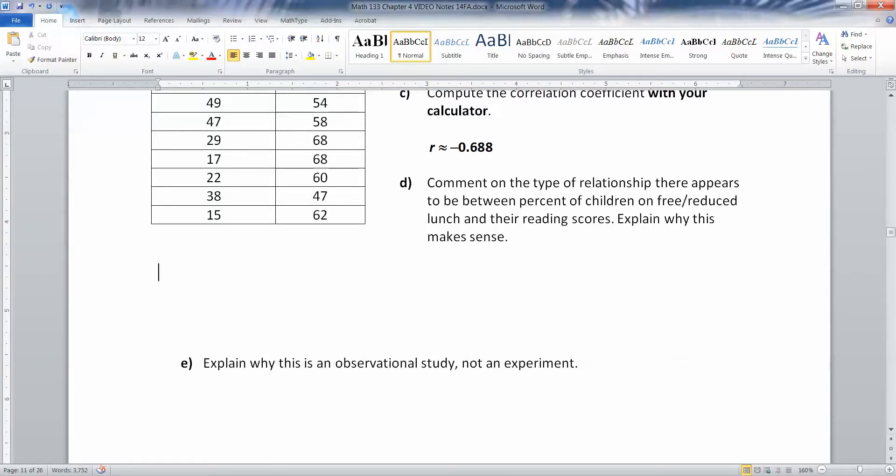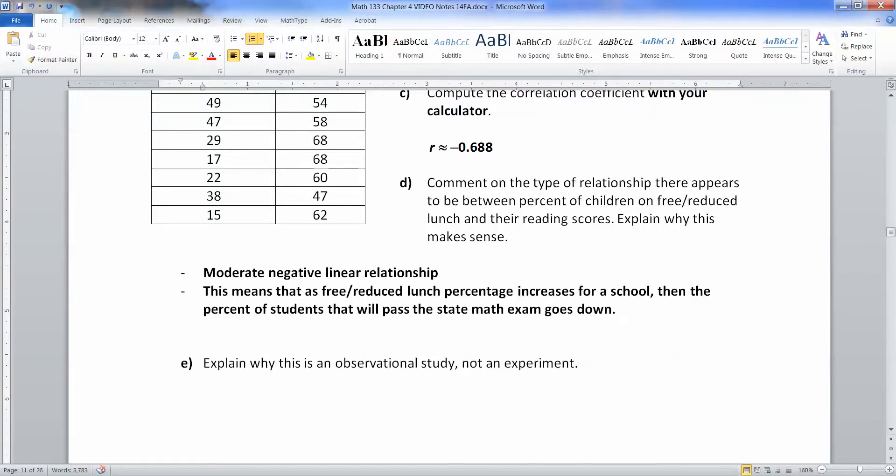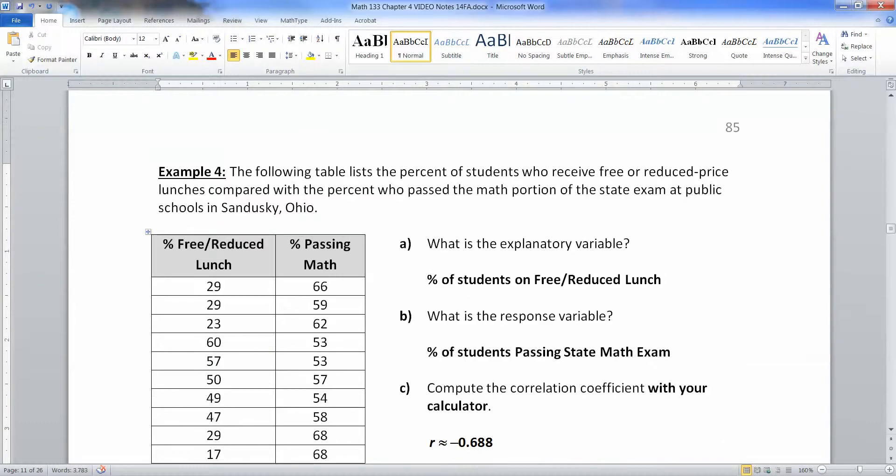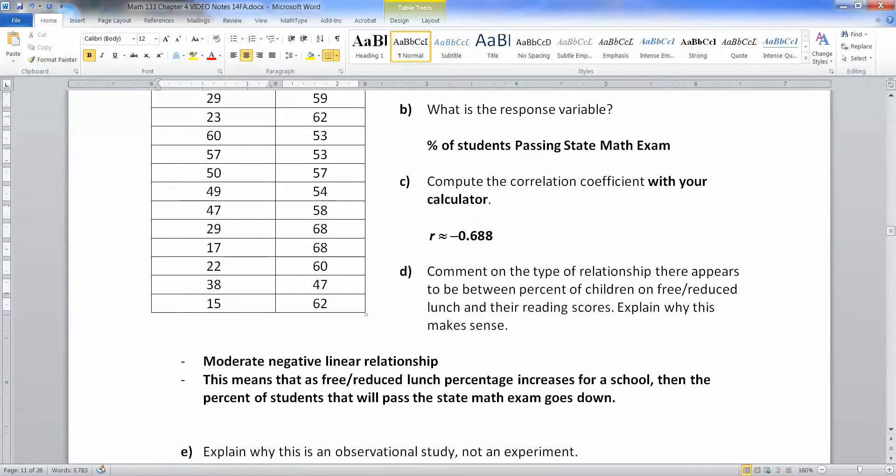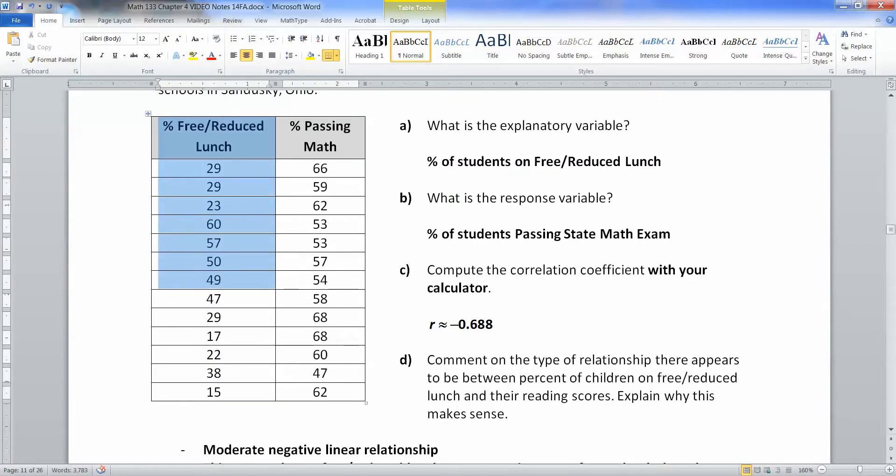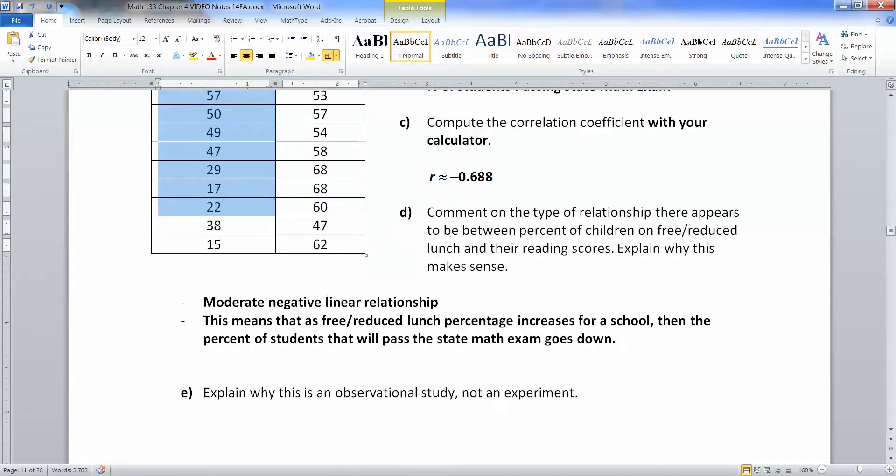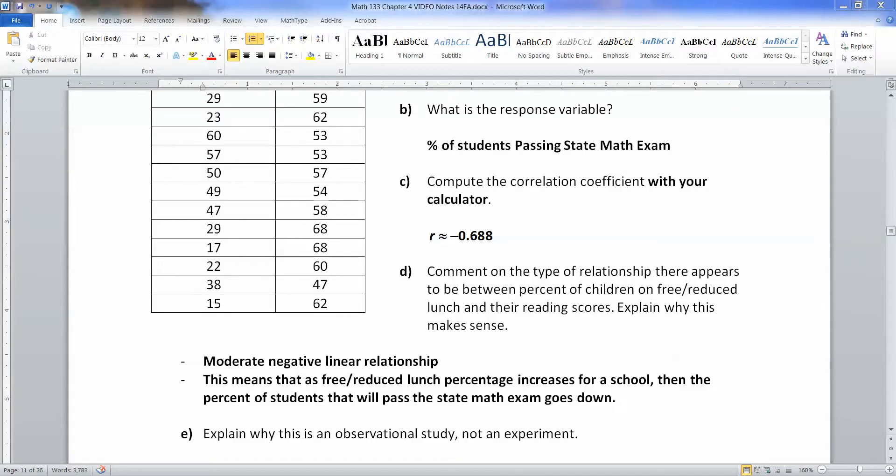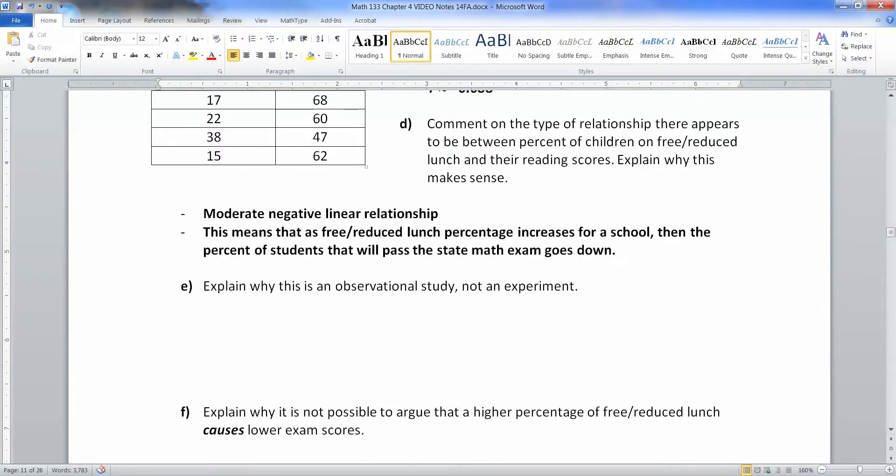This is a moderate negative linear relationship. That means that as free reduced lunch goes up, then your percent that passed math goes down. That's what a negative relationship means - as your x increases, then your y decreases. So as free reduced lunch goes up, passing math goes down, which is what we were just saying a second ago - that if you have increased poverty, hypothetically speaking, you have lower math scores. Now it does not have to be that way, that is just one relationship.